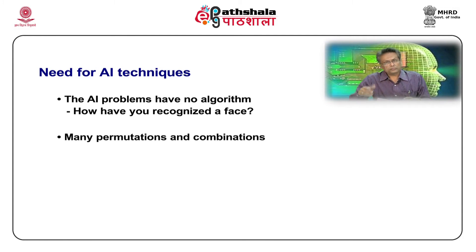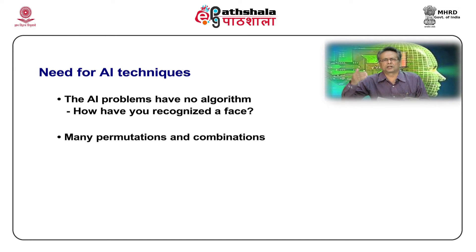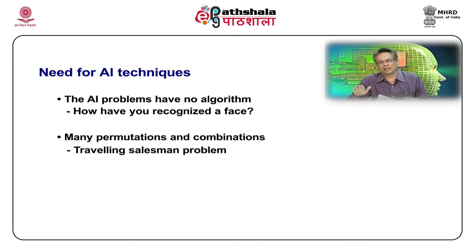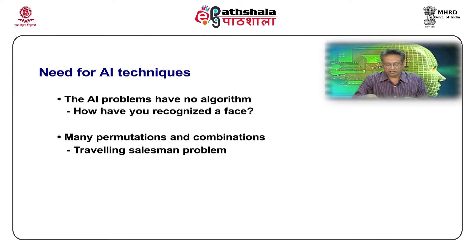The second problem: sometimes we have algorithms, but the algorithm has to enumerate so many combinations and permutations that it cannot complete in real time. For example, the traveling salesman problem — if you want to find the shortest path for a 25-city case, using conventional computing techniques, the program cannot complete in the salesman's lifetime. The algorithm is pretty simple, but it will not be able to complete in real time.